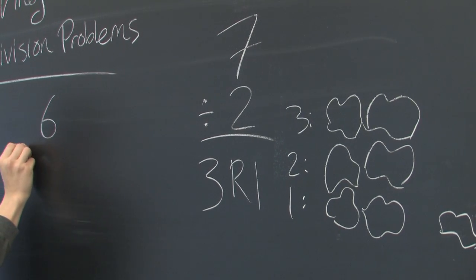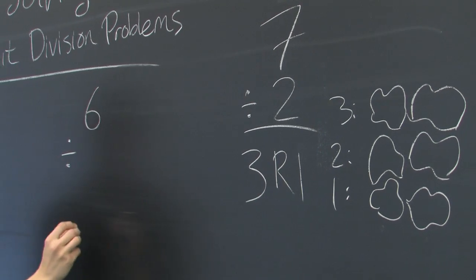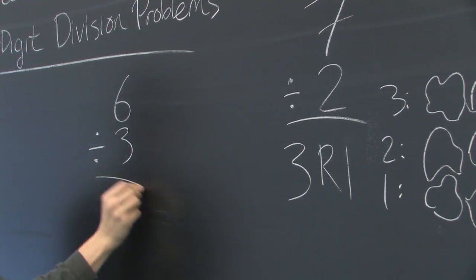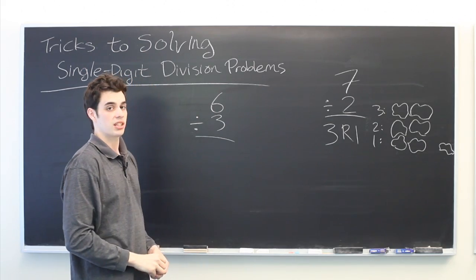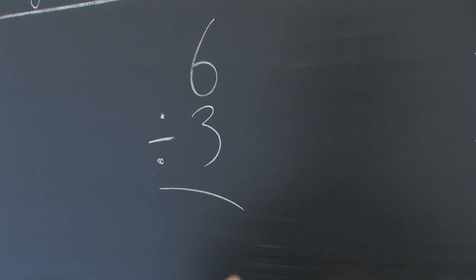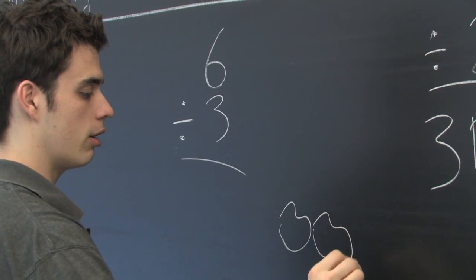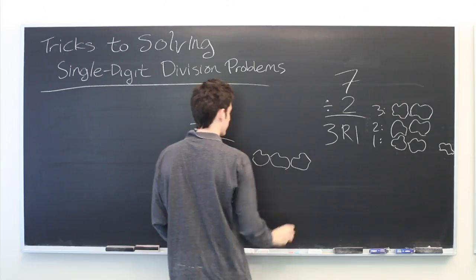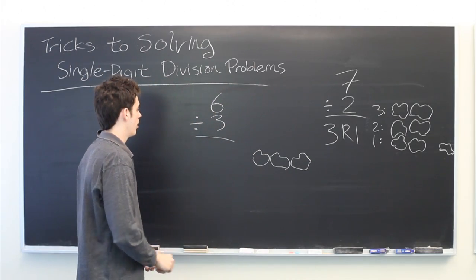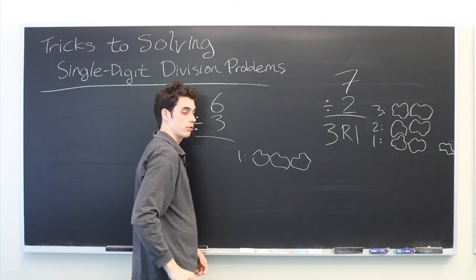But let's try it with something that doesn't have a remainder. We'll do 6 divided by 3. Again, we've got 3 blobs all sitting in a row. This is one set of 3 blobs.